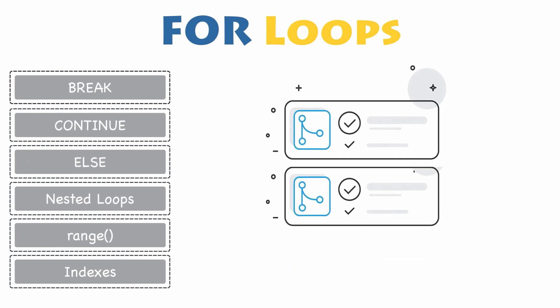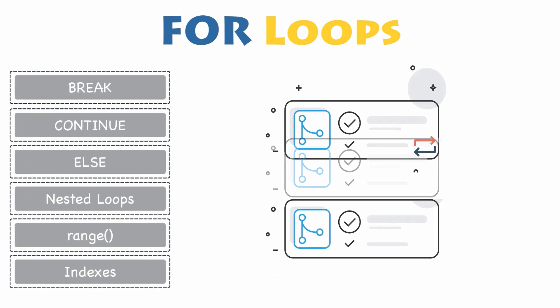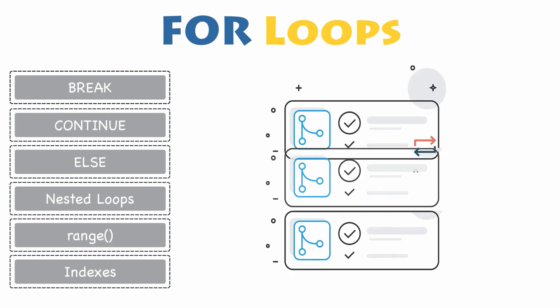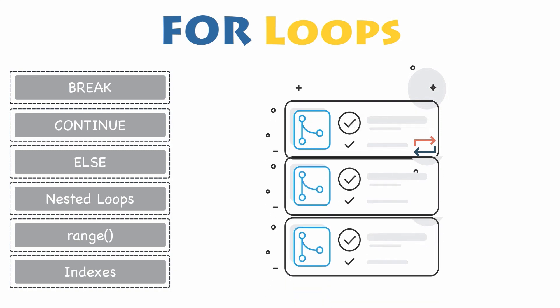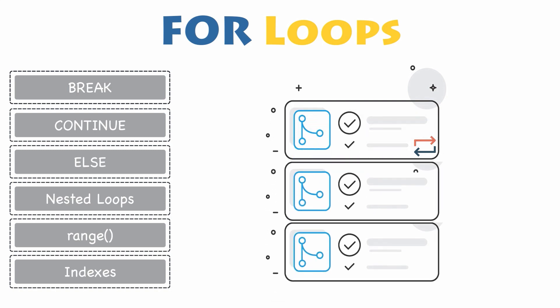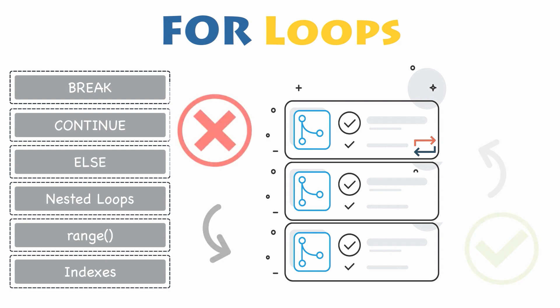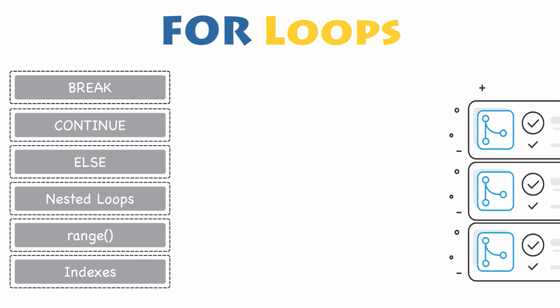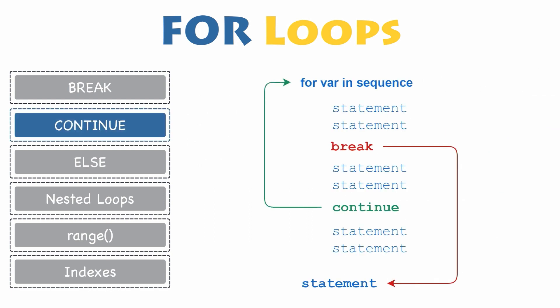In each example you have seen so far, the entire body of the for loop is executed on each iteration. It is all very well, but quite limited. Fortunately, Python provides two keywords, break and continue, that will terminate a loop iteration prematurely. Suppose this time you do not want to exit the loop, but just skip the current iteration and execute the rest of the iterations anyway with the next items. Continue in for loop.